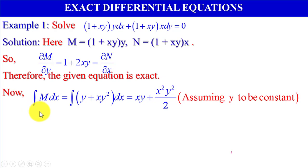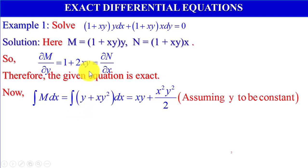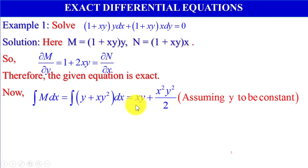Now, integration of M dx equals integration of (y plus xy squared) dx, since M equals y plus xy squared, which gives xy plus x squared y squared by 2, where we assume y to be constant.